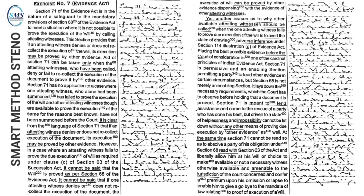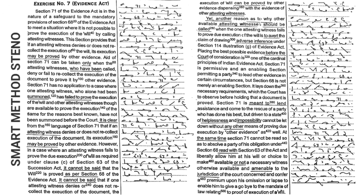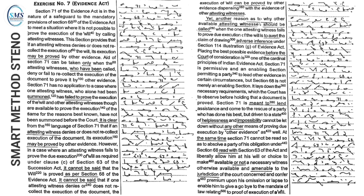Another reason as to why other available attesting witnesses should be called, when one attesting witness fails to prove due execution of the will, is to avert the claim of drawing adverse inference under Section 114 Illustration G of the Evidence Act. Placing the best possible evidence before the court is one of the cardinal principles of the Indian Evidence Act.